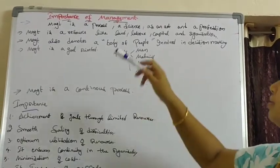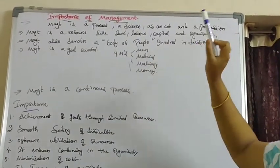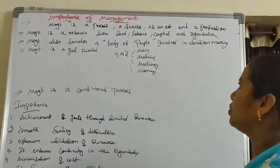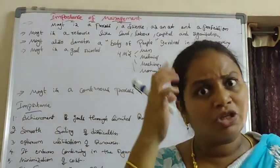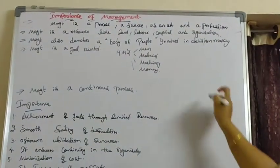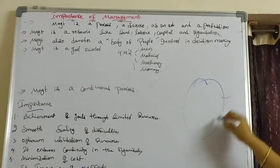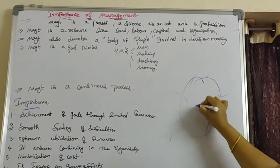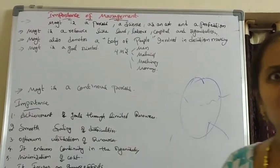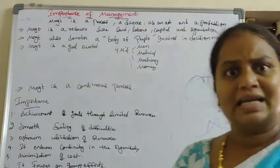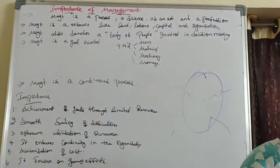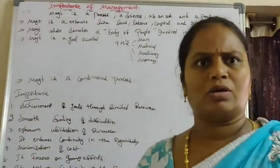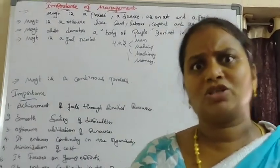Management also denotes a body of people in decision making. Decision making plays an important role for every people. Different groups make different types of decisions. Management is goal oriented - definitely I need 10 crores, I need 20 crores. For that goal, we have to achieve the management thing.